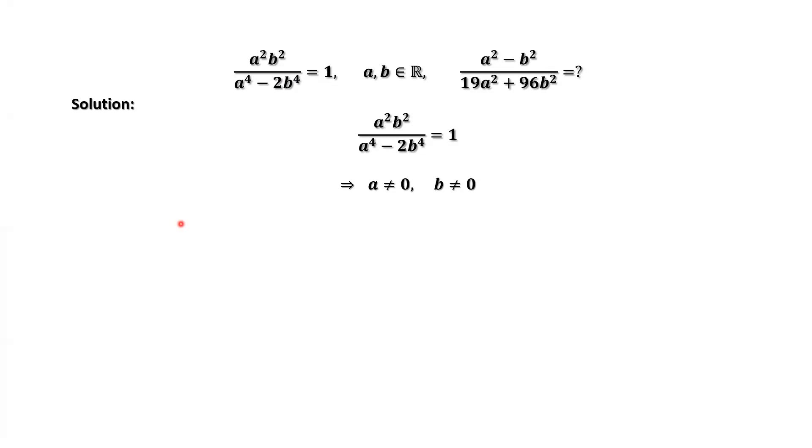Therefore, we have a squared times b squared equals a to the power 4 minus 2 times b to the power 4. This result is from the given condition. Both sides times a to the power 4 minus 2 times b to the power 4.